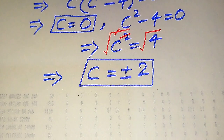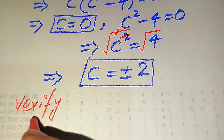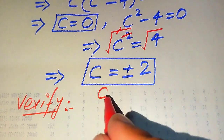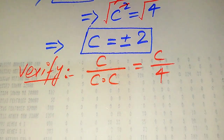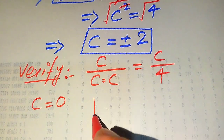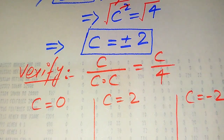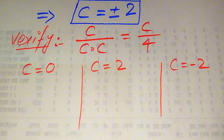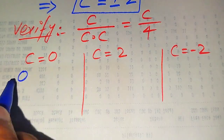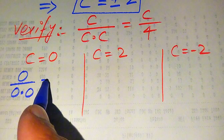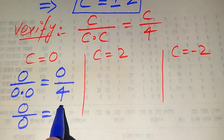Now we need to verify which roots are solutions and which are extraneous. We copy down the given equation: c divided by (c multiplied by c) equals c divided by 4. We verify c equals 0, c equals plus 2, and c equals minus 2. When we put c equals 0 on both sides we get 0 divided by (0 multiplied by 0) equals 0 divided by 4, which gives 0 over 0 equals 0.